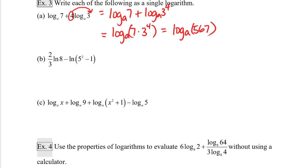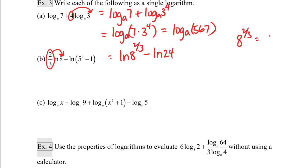Part b: two-thirds natural log of eight minus the natural log of five squared minus one. I'll start by taking the two-thirds and putting it back as a power, so this becomes the natural log of eight to the two-thirds minus the natural log of five squared minus one, which is really the natural log of 24. Now, eight to the two-thirds is the same as eight to the one-third squared. Eight to the one-third is the cube root of eight, which is two, and two squared is four. So this becomes the natural log of four minus the natural log of 24.